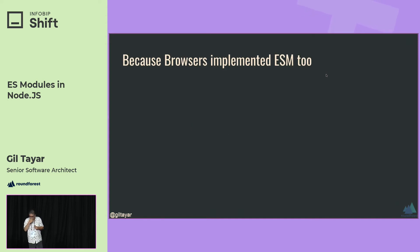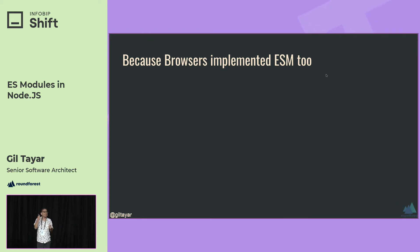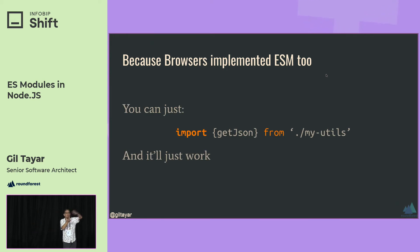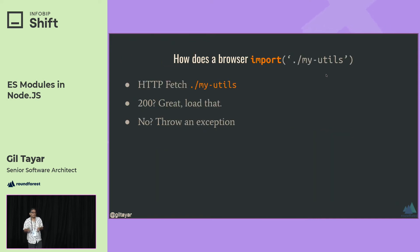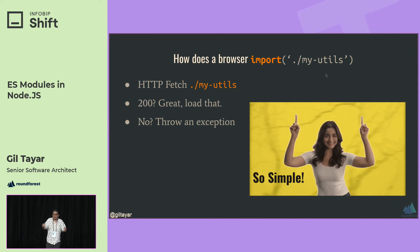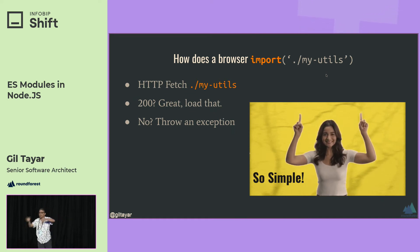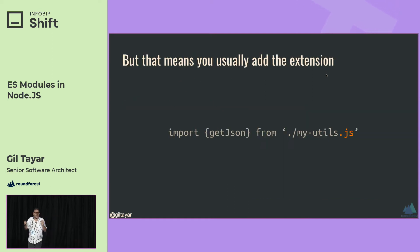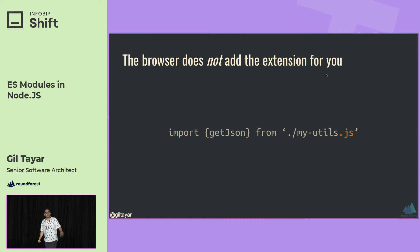Something curious happened: browsers started implementing ESM natively. If you have a regular HTML file with a script tag, you can just use import and it'll work. The browser will HTTP-fetch the file and load it as an ESM file — no need to transpile, no need to bundle. This is native ESM, and that is all the browser does. It doesn't go through that whole laundry list of looking for extensions. So you will usually import 'dot-slash my-utils.js' with the extension, because the browser will not add the extension for you.